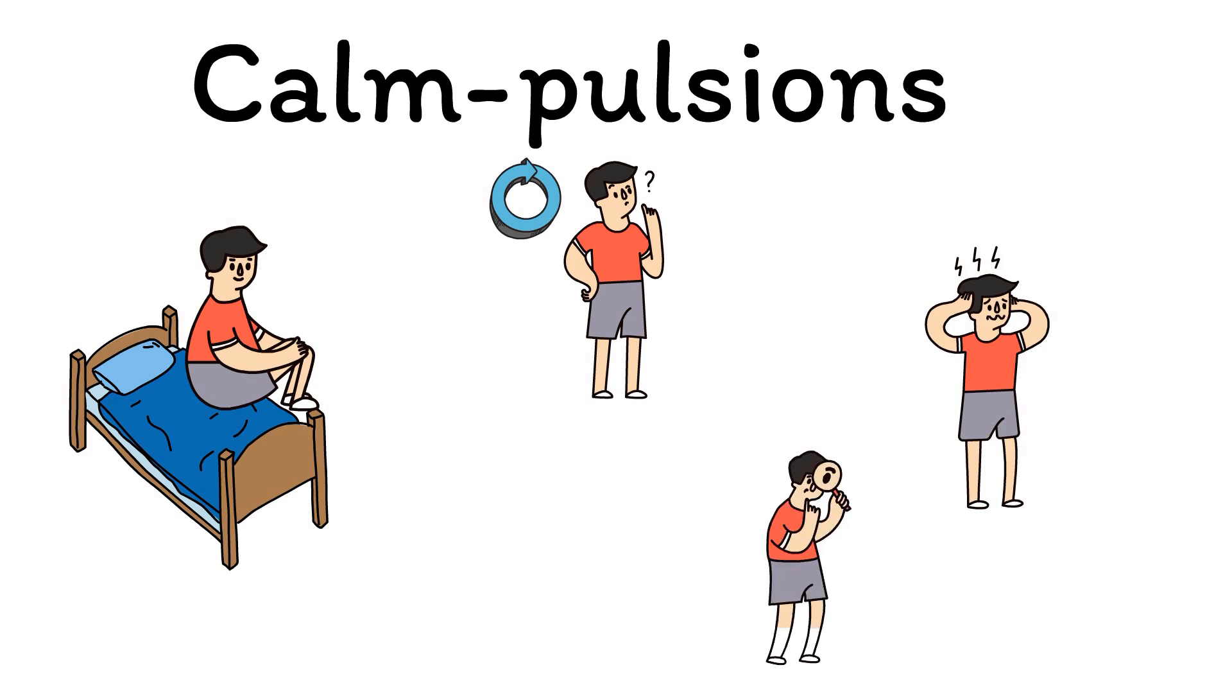He begins to feel increasingly anxious about what might happen if the door is left unlocked the whole night. To counter this anxiety, he gets up to check the door, which is a compulsion that immediately relieves his anxiety. However, as soon as he climbs back into bed, the thought suddenly recurs.